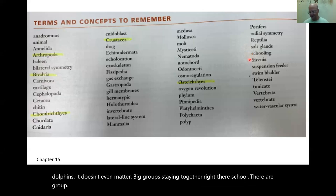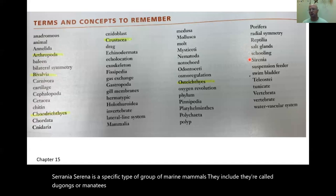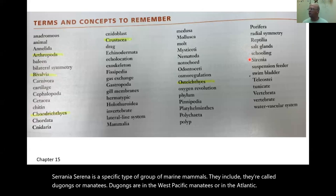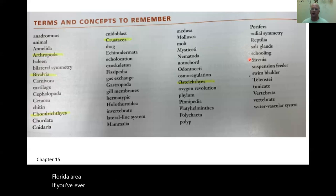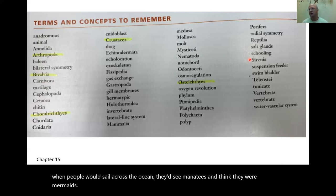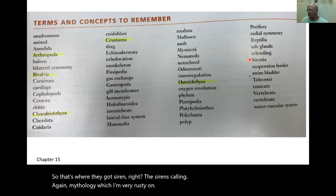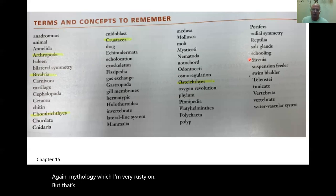Sirenia is a specific group of marine mammals — dugongs or manatees. Dugongs are in the West Pacific; manatees are in the Atlantic, Florida area. The myth of mermaids is based on manatees — sailors would see them and think they were mermaids. That's where the name comes from, related to the sirens of mythology.